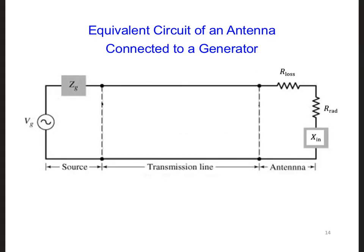So a quick question, what is the input impedance for this antenna? The input impedance, Z in, would be R rad, radiated, plus R loss, plus j X in.